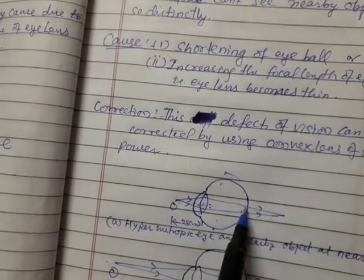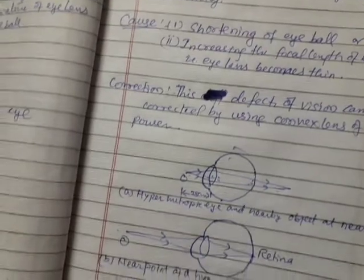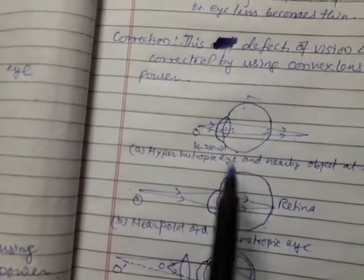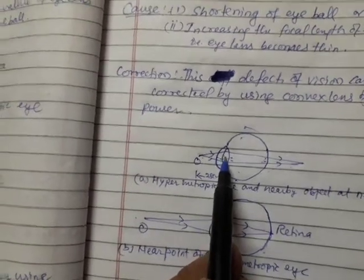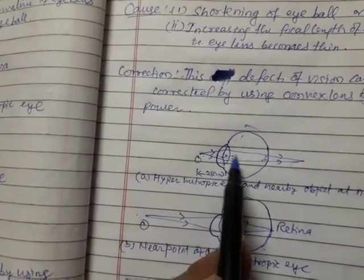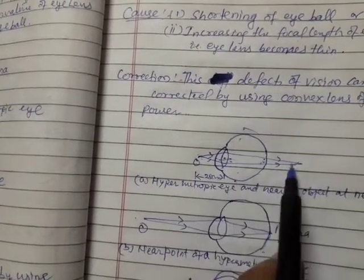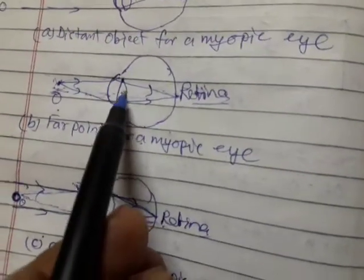That is called shortening of eyeball or increasing the focal length of the eye lens, means when the eye lens becomes thin, then its focal length is more. When the eye lens is thick, then its focal length is less.